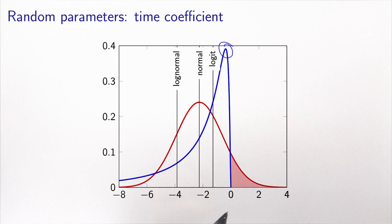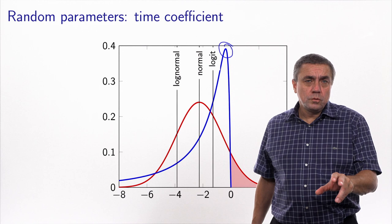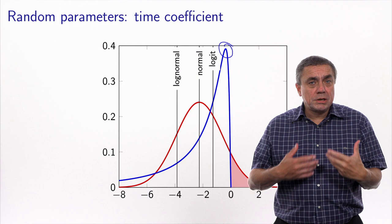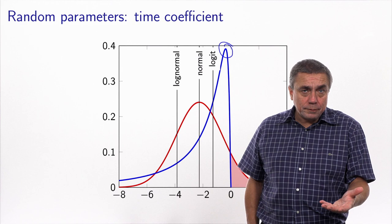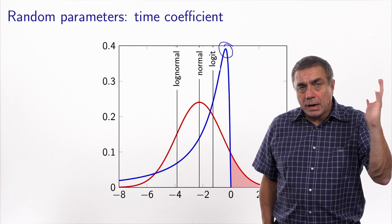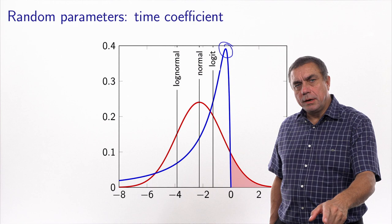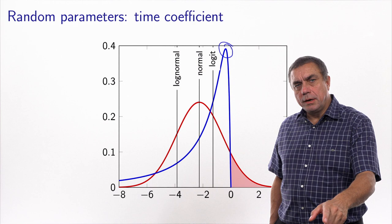If you look at the log-normal distribution, we have a very big value of the PDF associated with values which are close to zero. The data we used comes from a stated preference survey where people had to respond to a questionnaire describing hypothetical choice situations and select one alternative. This is not necessarily easy, and in particular there may be a fatigue effect, and respondents may actually omit to take into account some of the variables presented to them.